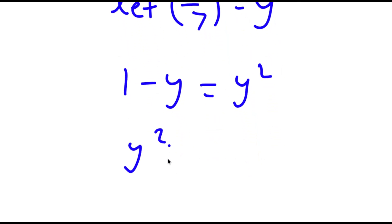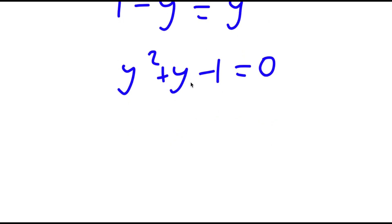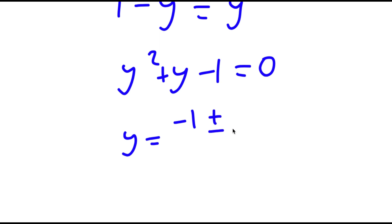So now I have 1 minus y is equal to y squared, which is the same thing as y squared plus y minus 1 is equal to 0. Using the quadratic formula to solve this, I end up getting y is equal to negative 1 plus or minus the square root of 5, all over 2.